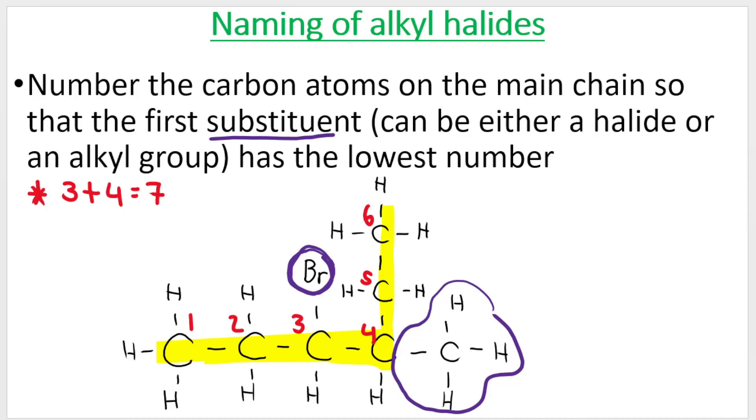Let's try and number the chain in reverse order. 1, 2, 3, 4, 5, 6. So if I choose to number it this way, then my substituents are on carbon 3 where I have a methyl, and on carbon 4 I have a bromo. I've got an interesting situation because no matter which way I number it, overall the branches give me 7.